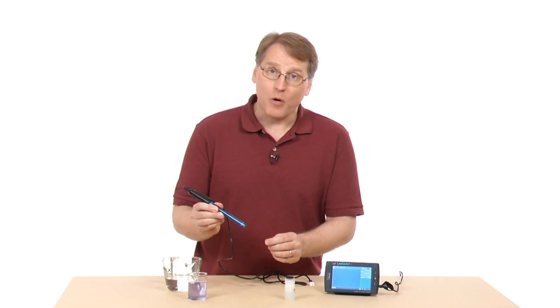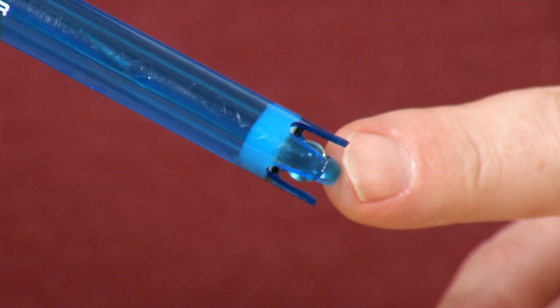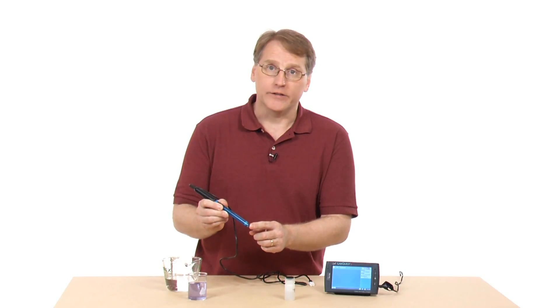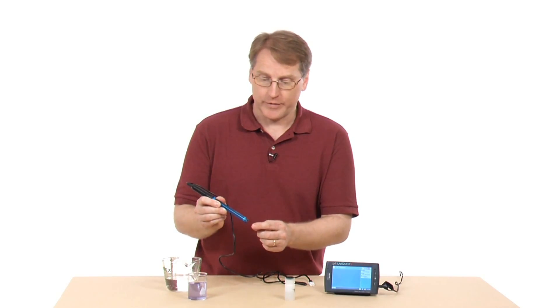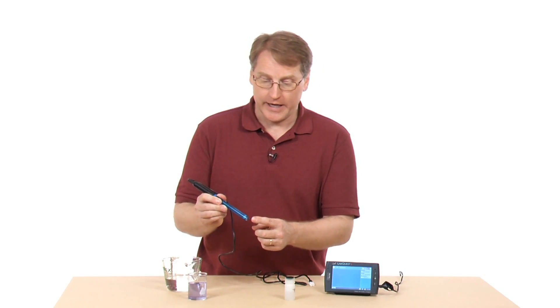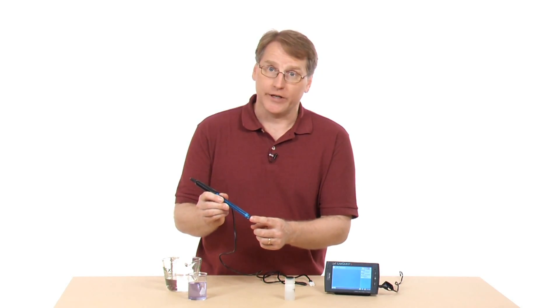Now the active part of this sensor is this glass globe down here, and that must be in contact with the solution that you're trying to measure the pH of. You need to be careful with this because it's glass, and it actually has a protective cage around there.